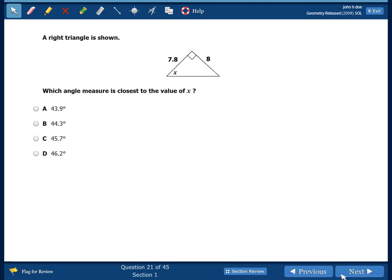So number 21 says a right triangle is shown. Here's our keyword. Which angle measure is closest to the value of X? So whenever we have or need an angle in a right triangle, we have to use trigonometry. We have to use SOH CAH TOA.